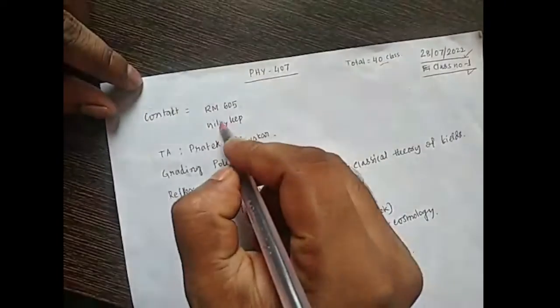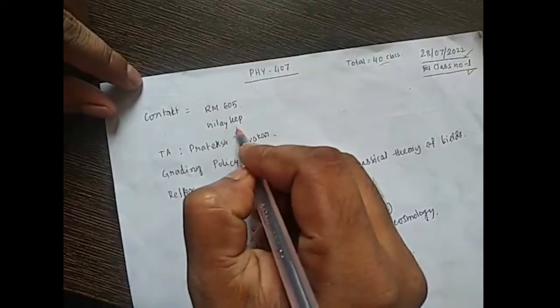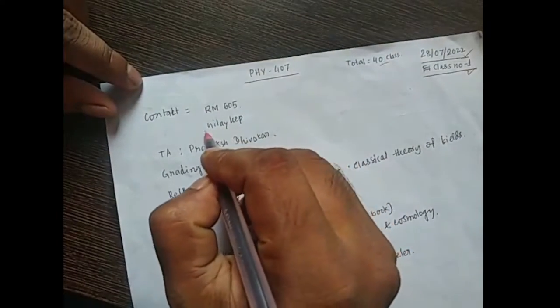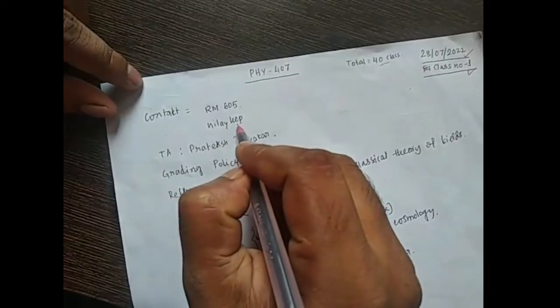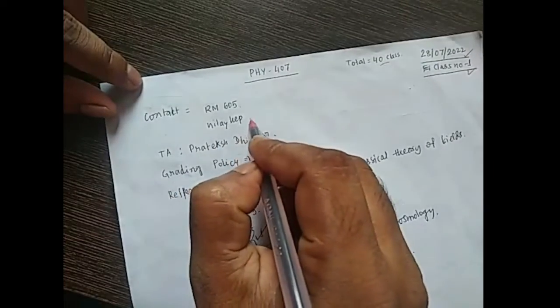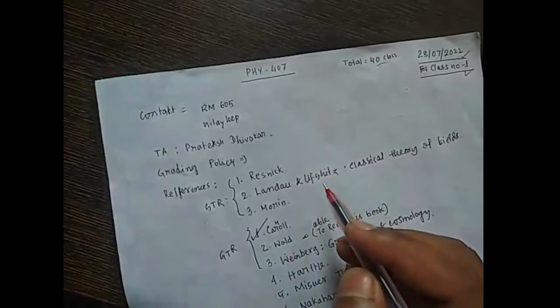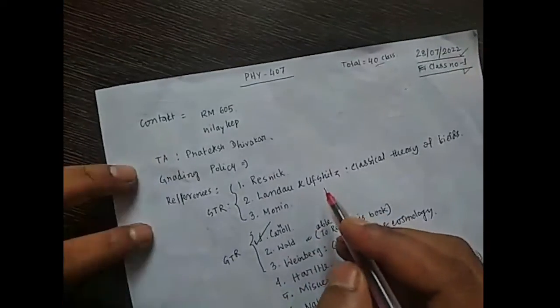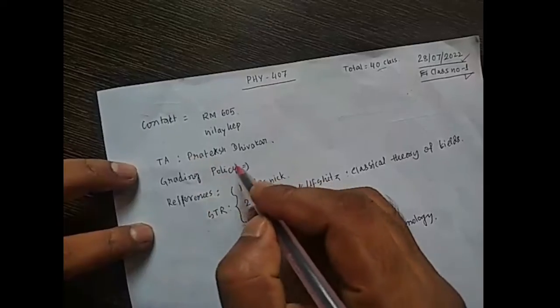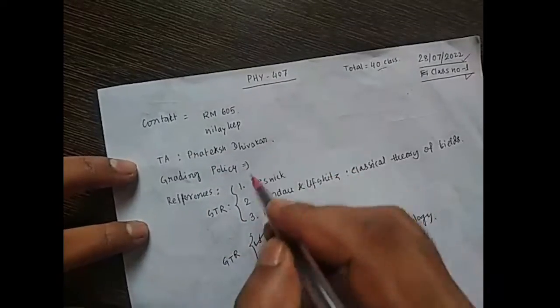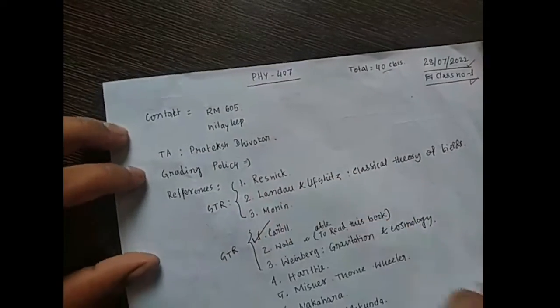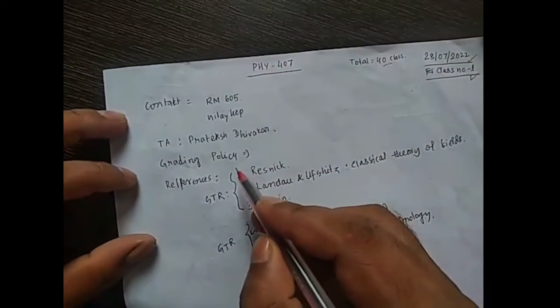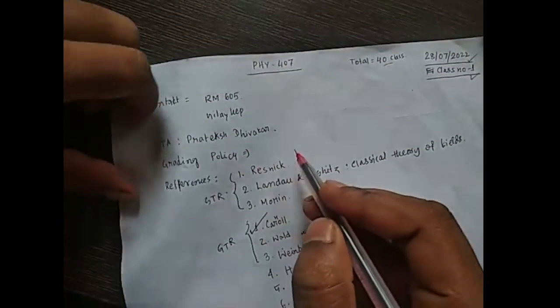Administrative details include the Quantac RM Building, Niloi Emelary, Niloi ATP, K.se.in, T.A. Pratesh Divakar. The grading policy will be discussed later.